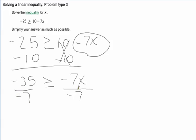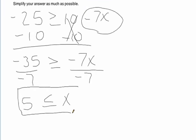Remember, any time we multiply or divide by a negative in an inequality, it switches that sign. So over here, we get a positive 5 is less than or equal to x. And that makes our final answer.